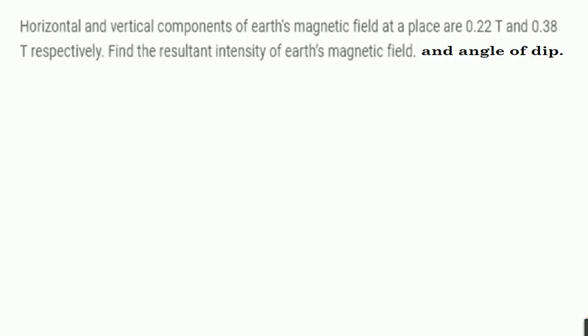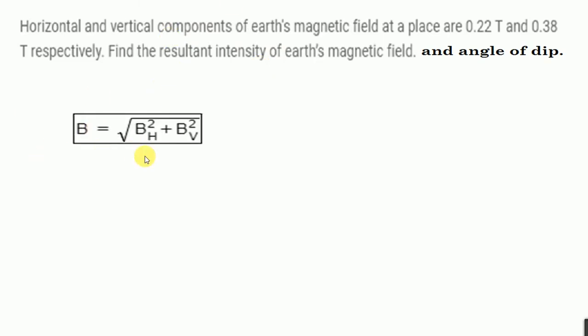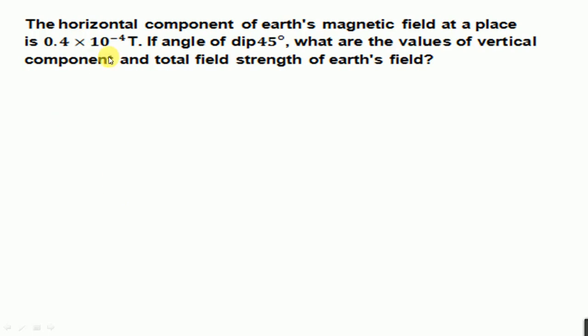Next question: the horizontal and vertical components of Earth's magnetic field are 0.22 tesla and 0.38 tesla — find the resultant intensity of Earth's magnetic field and the angle of dip. Since both components are given, use the resultant formula to find the total magnetic field. To find the angle of dip, use the dip formula. Another question: the horizontal component is 0.4 × 10⁻⁴ tesla and the angle of dip is 45 degrees — find the vertical component and the total magnetic field strength.